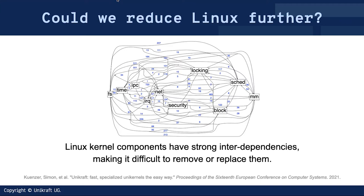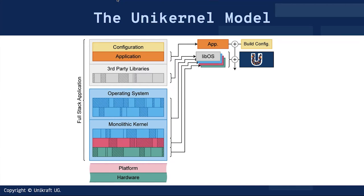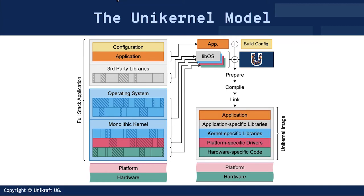To address this problem, we think of the stack as a series of different components that we can "libraryize." We look at the full stack of a VNF-type application that would normally deploy on a monolithic Linux distribution, identify all the different components it requires, turn them into individual libraries, and pair them with a build system — this is essentially what Unikraft is. We pick and choose those libraries as needed to construct what is known as a Unikernel: a final binary image that has only the necessary libraries, platform, and hardware code needed to make the application run — nothing more, nothing less.